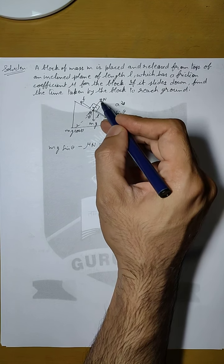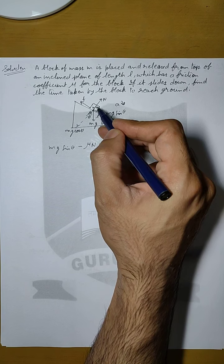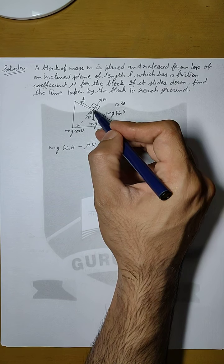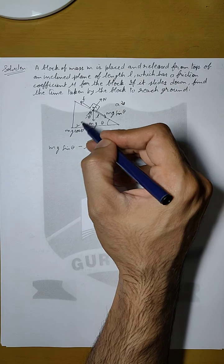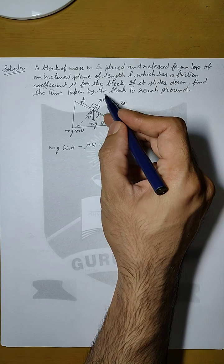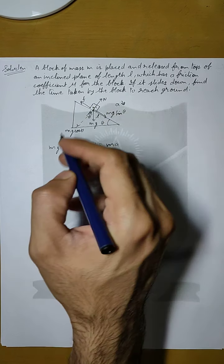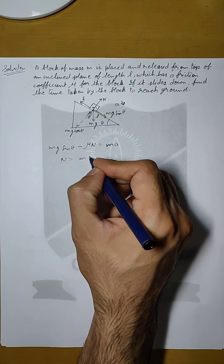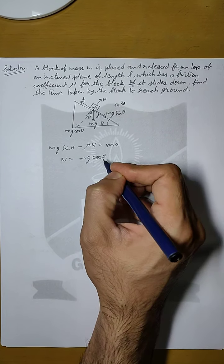Also N has to be equal to Mg cos theta to keep the block in equilibrium. Otherwise if N is greater than Mg cos theta then the block will be moving in this direction also. But since that is not happening that means N should be equal to Mg cos theta.